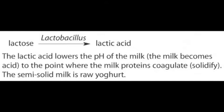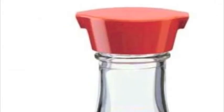Lactose is converted via Lactobacillus to lactic acid. The lactic acid lowers the pH of the milk, making it more acidic to the point where the milk proteins coagulate or solidify. The semi-solid milk is raw yogurt. The raw yogurt is cooled quickly, and different flavorings or fruit may be added, or it may be put into pots as natural yogurt. The pots are then sealed and ready for sale.